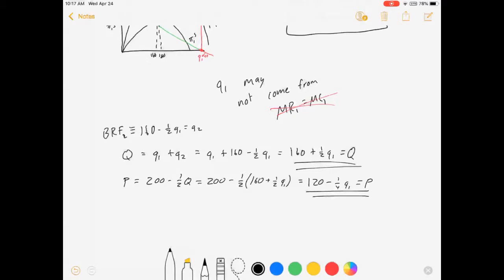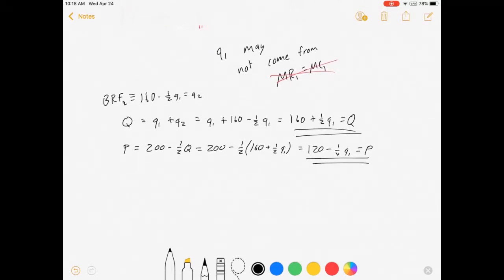So our market Q is equal to Q1 plus Q2, which is equal to Q1 plus 160 minus 1 half Q1, which means it's 160 plus 1 half Q1. There's our market Q. From there we can solve for prices.